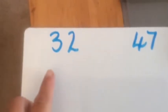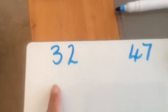I threw a three and a two which made thirty-two and then I threw a four and a seven so I created forty-seven. Now I need to find the total of those two numbers so I'm going to add them together. First of all, always put the biggest number first.